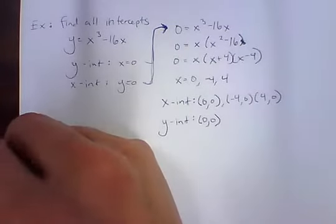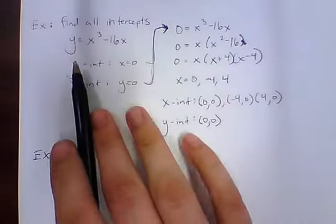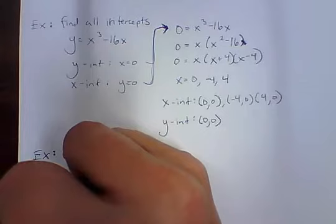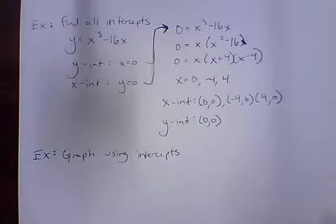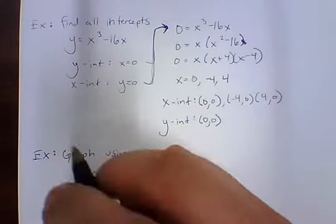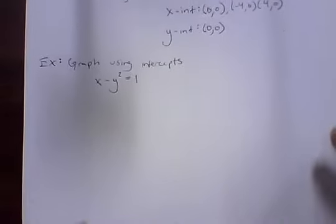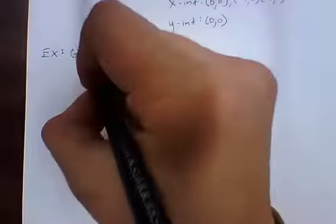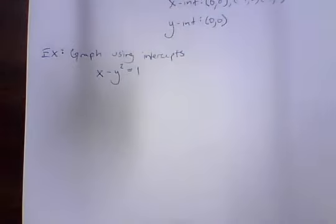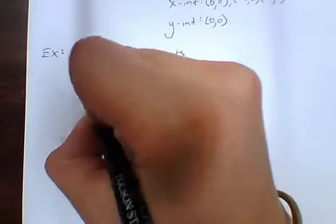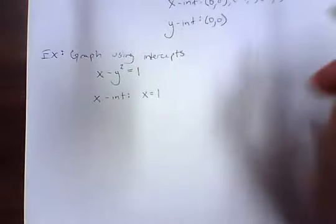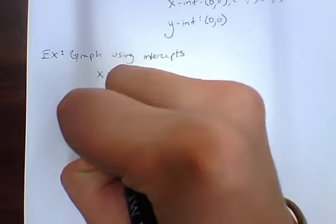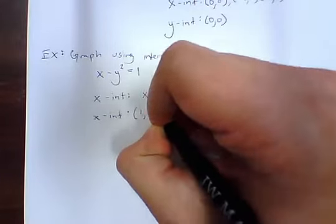Now, what if we were asked not just to find our intercepts, but to graph using intercepts? Our function is x minus y squared equals 1. We'll start the same way — finding intercepts first. For the x-intercept, we set y equal to 0. That gives us x equals 1, so we have an x-intercept at (1, 0).